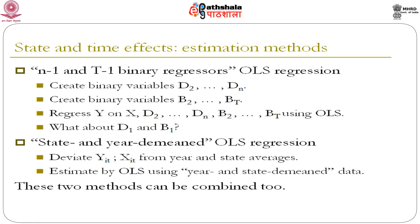Combining both methods gives the fixed effect model. The fixed effect regression assumptions for a single x are: y_it is a function of x_it; observations (x_i, u_it) are drawn from a joint distribution; there is no perfect multicollinearity; and assumptions 3 and 4 are identical for every year t.